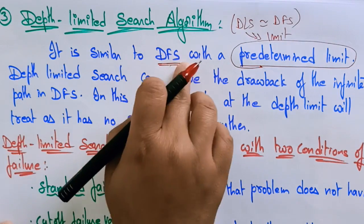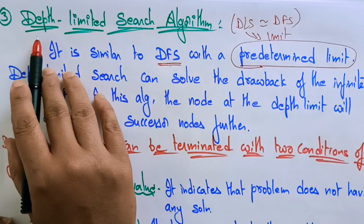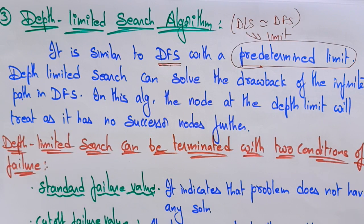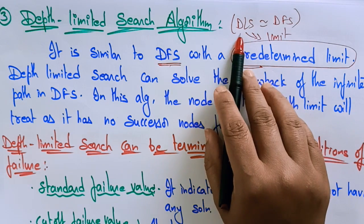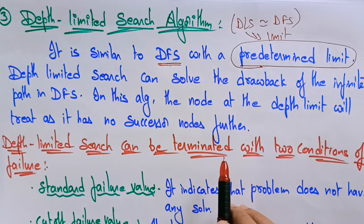The drawback of depth first search is that it may sometimes go into an infinite loop. It has to read all the nodes until the last depth, with no limit on how far it searches the tree. To overcome this disadvantage — that DFS goes deep down and may loop infinitely with no guarantee of finding a solution — we use the depth limited search algorithm.